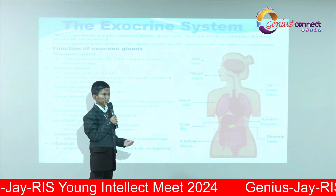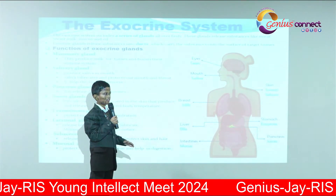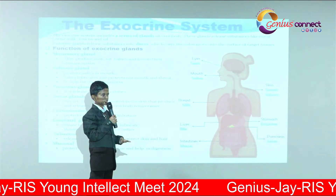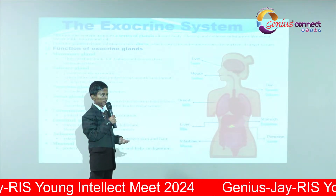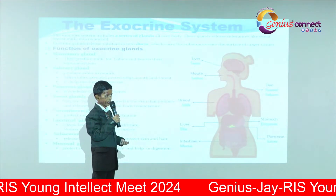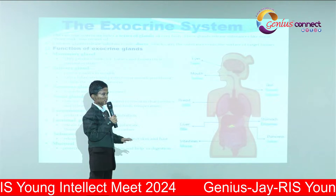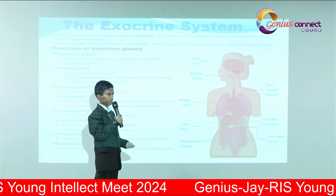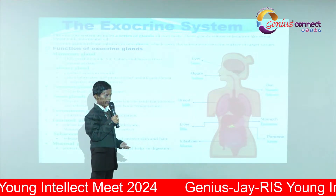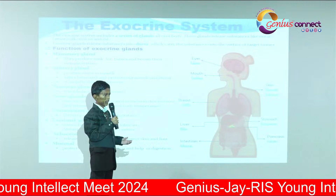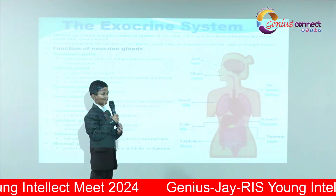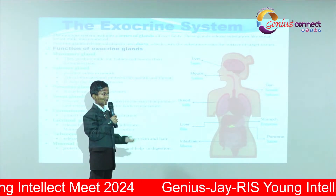The lacrimal gland releases a layer of tears to lubricate and protect the eyes and face. The sebaceous gland releases oil to protect skin and hair. The mucosal gland protects skin and hair and helps with digestion.